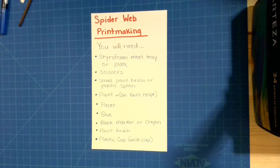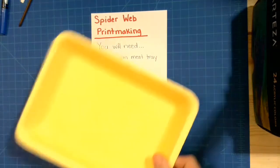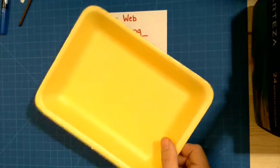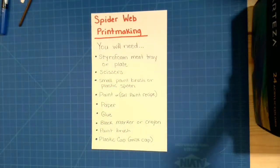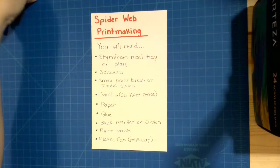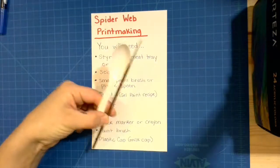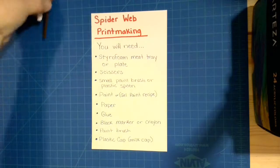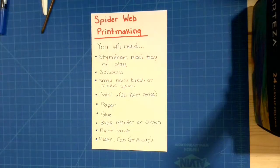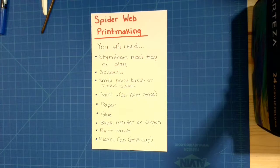For this lesson you will need a styrofoam meat tray or plate, a pair of scissors, a small paintbrush or a plastic spoon, paper, paint (you could use the gel paint recipe that I sent you), glue, a black marker or crayon, a paintbrush, and a plastic cap. A milk cap would work perfect.